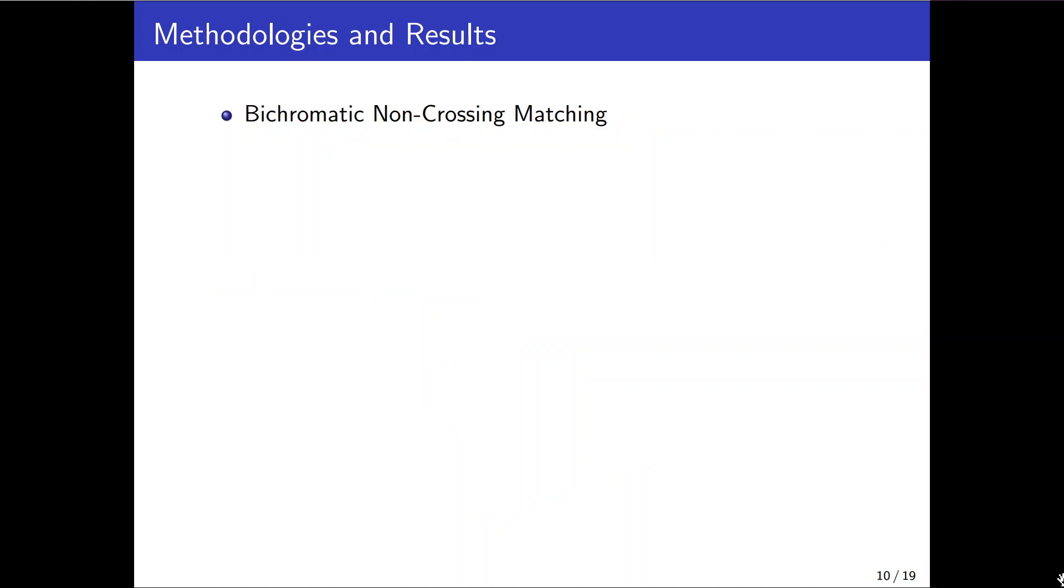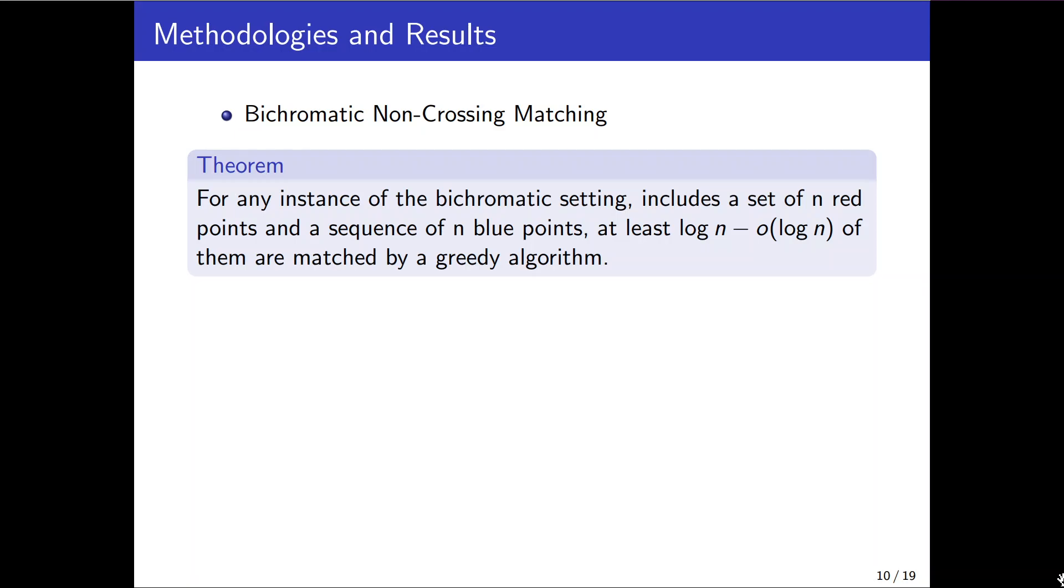Next part we studied the bichromatic setting and showed that the greedy algorithm can match at least log n blue points with red ones. We here considered the greedy median algorithm. Once the first blue point given as x arrives the algorithm creates a list of eligible red points sorted by angular ordering to match with. At first this list includes all the red points.